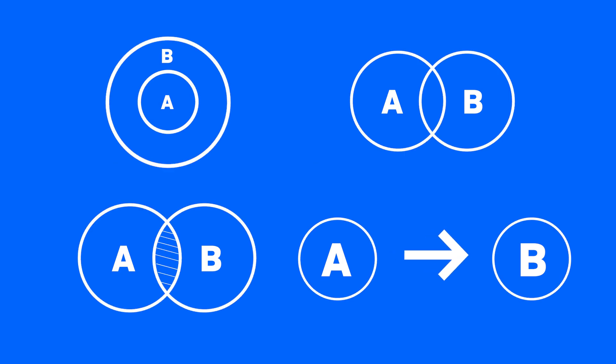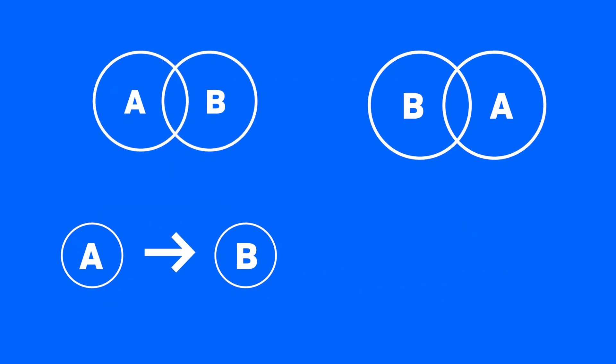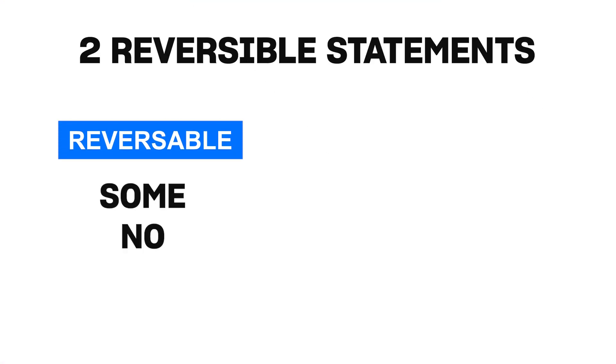two are reversible. That means some A is B can be written as some B is A. No A is B can be written as no B is A. So there are two reversible statements: the reversible statements are some and no.